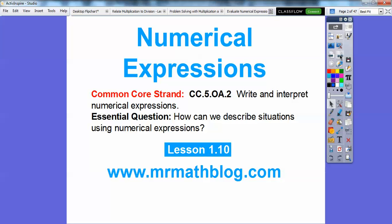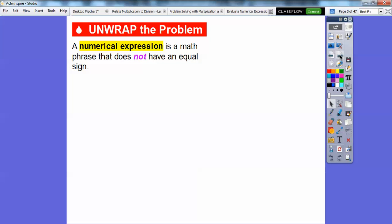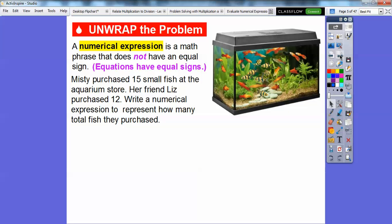So here's our question: How can we describe a situation using numerical expressions? It's a pretty easy lesson. A numerical expression is a math phrase with pluses, minuses, divide, and multiply. It does not have an equal sign. Equal signs have equations. If you see an equal sign, that's an equation. Otherwise, it's a numerical expression if it doesn't have an equal sign.